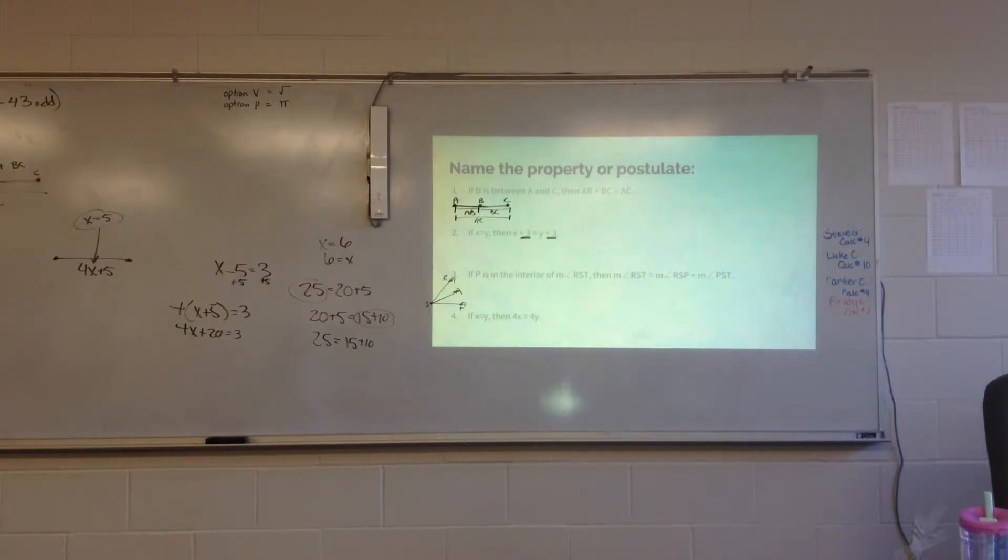And then for two and four, I just kind of ask myself, okay, how did they go from the if part to the then part? What did they do to both sides of the equal sign on the if part to get to the then part? That's called the addition property of equality, which basically says that once you're adding the same number to both sides of the equal sign, it stays equal. So addition property of equality.